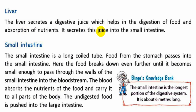Let's see the small intestine. The small intestine is a long coiled tube. Food from the stomach passes into the small intestine. Here, the food breaks down even further until it becomes small enough to pass through the walls of the small intestine into the bloodstream. The blood absorbs the nutrients of the food and carries it to all parts of the body. The undigested food is pushed into the large intestine.